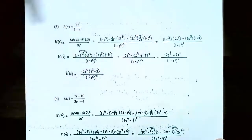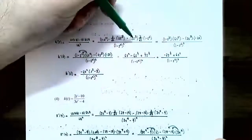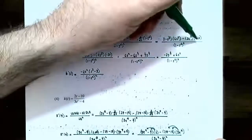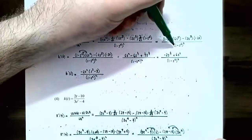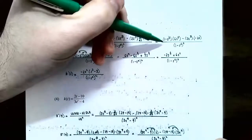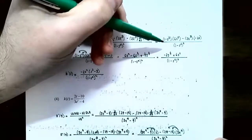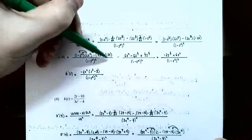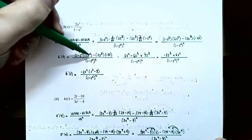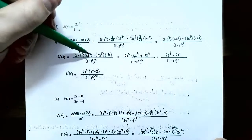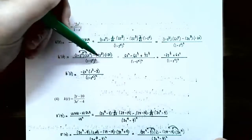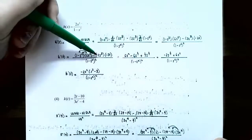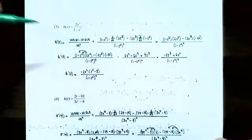Now find the derivatives. The derivative of 2s cubed using the power rule is 6s squared. The derivative of 1 minus s squared: derivative of 1 is 0, derivative of s squared is 2s, so it's negative 2s. So h prime of s is: 1 minus s squared times 6s squared, minus 2s cubed times negative 2s, all divided by 1 minus s squared, all to the second power. This is the derivative, but if we were asked to simplify, we go further.